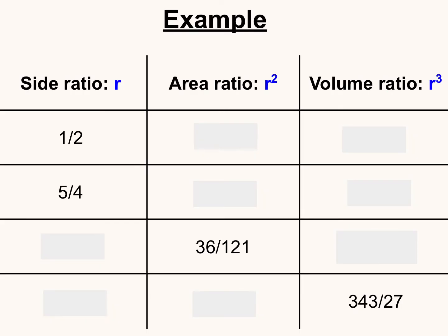So in this first example, we're given many ratios. We're given these two side ratios and are asked to find the missing area and volume ratios. And then in these examples, we're given the area ratio and the volume ratio and asked to find the other two.